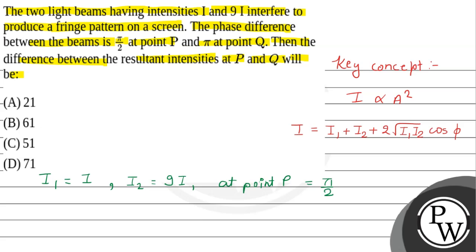Now from the formula, we'll find the resulting intensity at point P. So Iₚ = I₁ + I₂ + 2√(I × 9I) × cos φ. At point P, φ = π/2, so the resultant intensity at point P is 10I, because cos 90° equals 0.